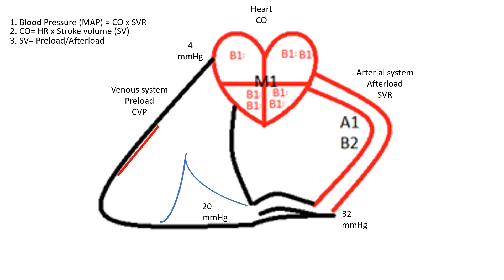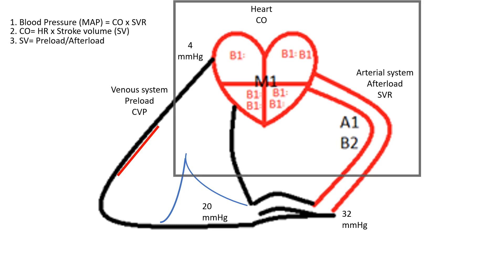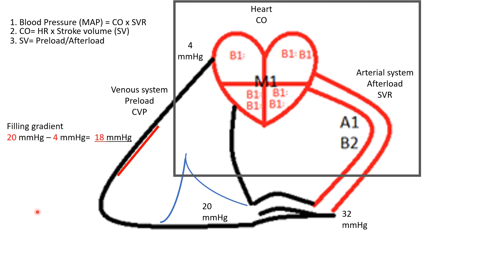When we take a breath in, our diaphragm contracts and flattens out, meaning the thoracic space expands. Because I have a larger space but the same amount of gas, the pressure decreases. So now the pressure at the right heart is about 4 millimeters of mercury, and my pressure post-capillary is still 20 millimeters of mercury, giving a filling gradient of 20 minus 4, or 18 millimeters of mercury. This increases the drive to send fluid back to the right heart.